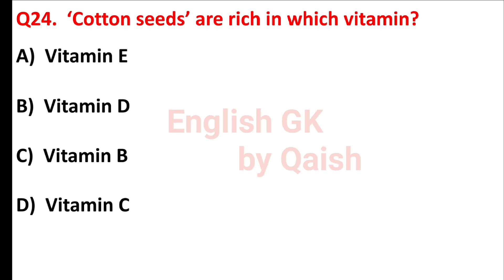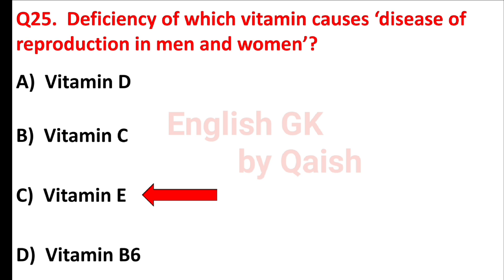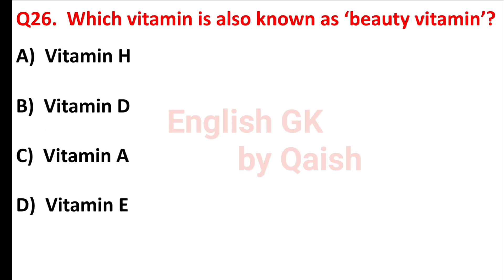Cotton seeds are rich in which vitamin? Answer is option A, vitamin E. Deficiency of which vitamin causes disease of reproduction in men and women? Answer is option C, vitamin E. Which vitamin is also known as beauty vitamin? Answer is option D, vitamin E.